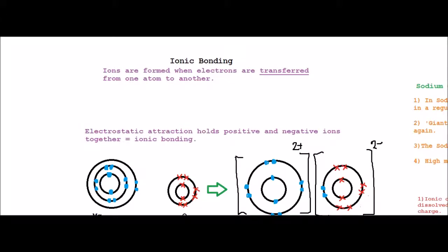So ions are formed when electrons are transferred from one atom to another, and the simplest ions are single atoms which have either lost or gained one, two, or three electrons so they have a full outer shell.